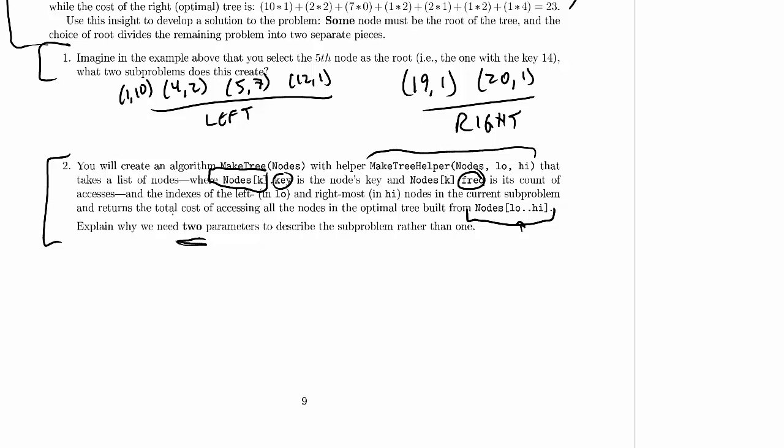Let's take a look at why this would be. Using two parameters lets us pick out any arbitrary consecutive sequence of nodes inside the array. Using just one parameter, well, there's a variety of ways we could use that parameter, but probably it's only going to let us pick out all of the nodes from...